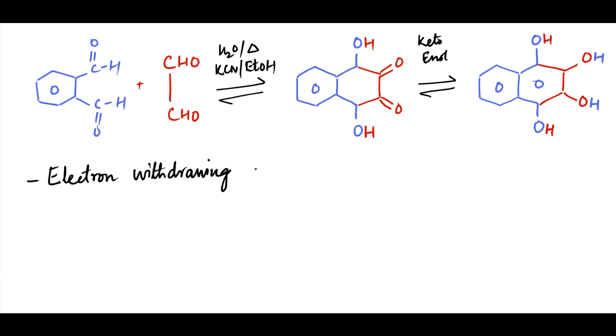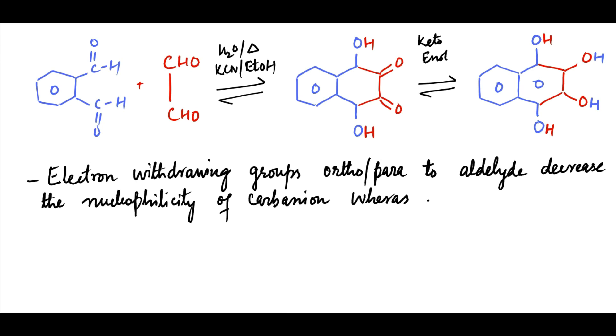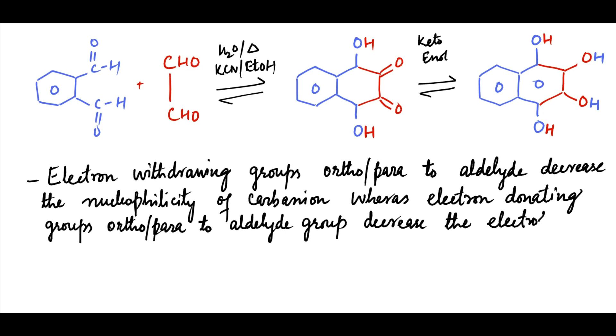Electron withdrawing groups ortho- or para- to aldehyde group decrease the nucleophilicity of carbanion, whereas electron donating groups ortho- or para- to aldehyde group decrease the electrophilicity of acceptor aldehyde, thereby slowing the reaction.